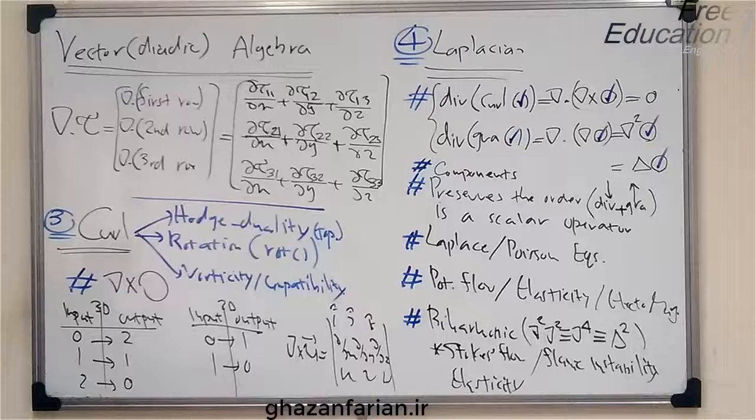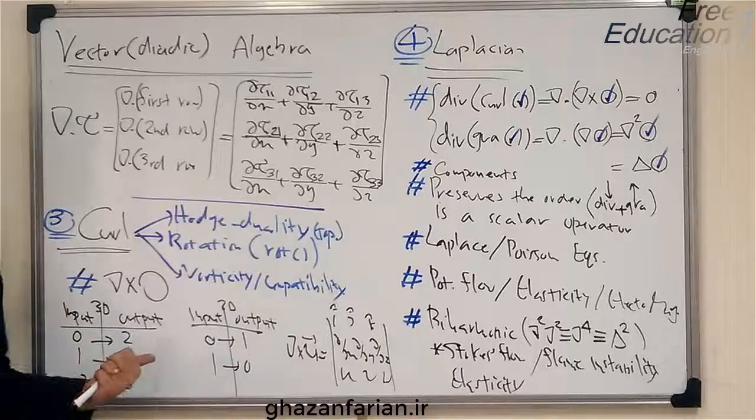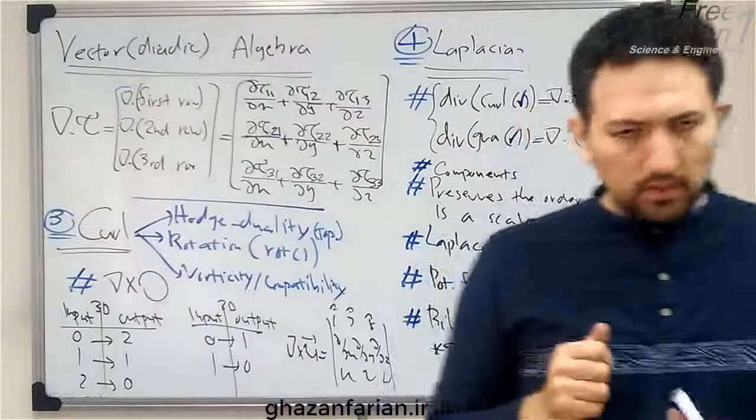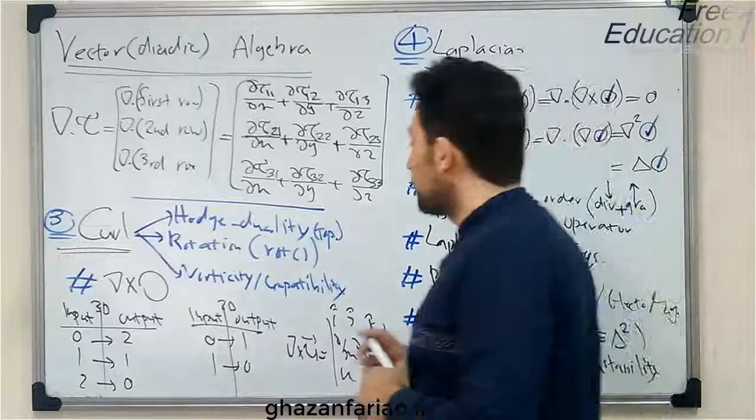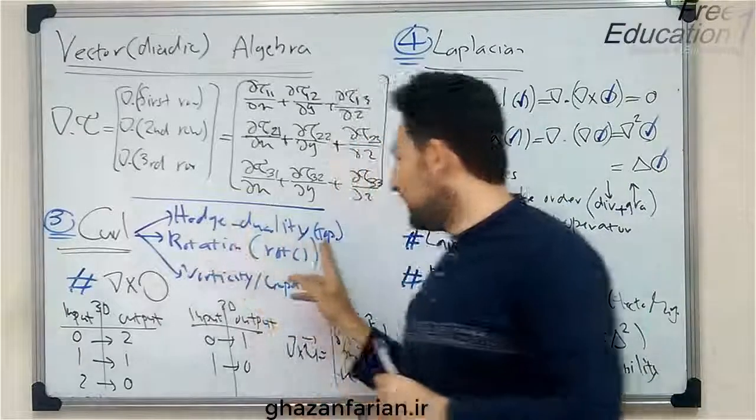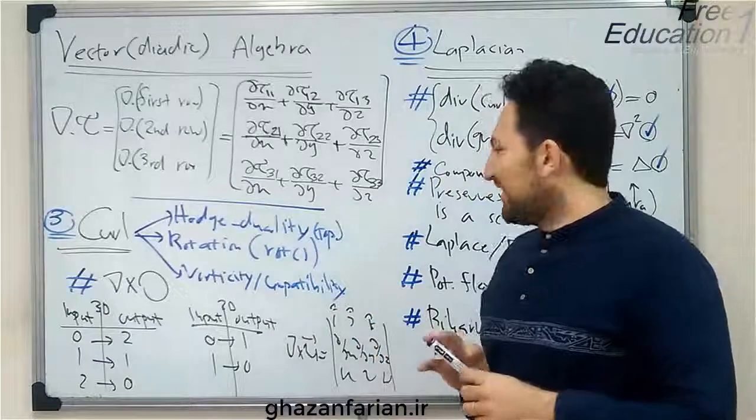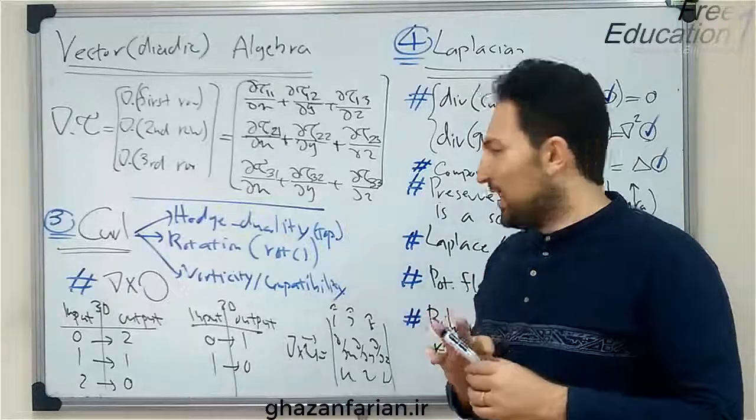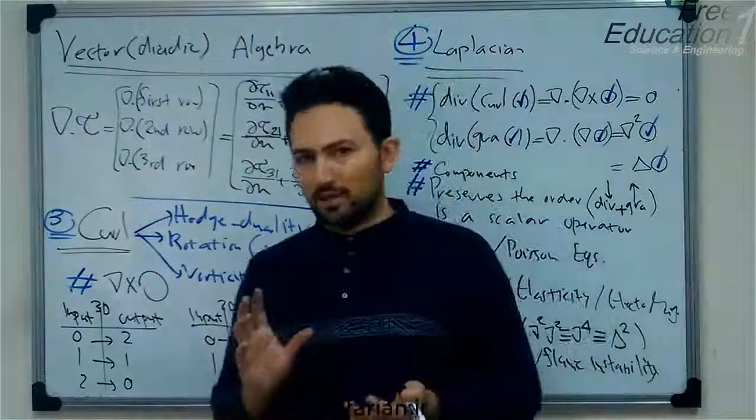The third important operator in vector algebra is the curl operator. If I want to speak about the origin of this operator, I have to describe the Hodge duality in topology. I don't want to speak such deeply, but the result of that origin is very important. From physical viewpoint, the curl operator represents the rotation of something.